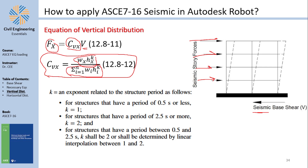There is one trick: there is a k exponent, meaning the relationship could be linear or quadratic — it depends on the period of vibration T, which equals Ta, something explained in the previous video. If the period of vibration is 0.5 seconds or less, the exponent k is 1, giving a linear function. If the period is 2.5 seconds or more — a long vibration period — then k equals 2. Anything in between can be interpolated.